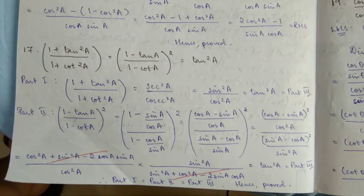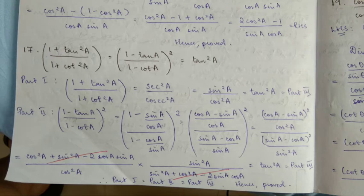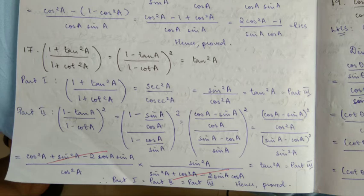Question number 17, part 1, part 2, part 3. Part 1: 1 plus tan²A by 1 plus cot²A — direct substitution formula. 1 plus tan²A is sec²A. 1 plus cot²A is cosec²A. So sec²A by cosec²A gives sin²A by cos²A, which is tan²A — equal to part 3.